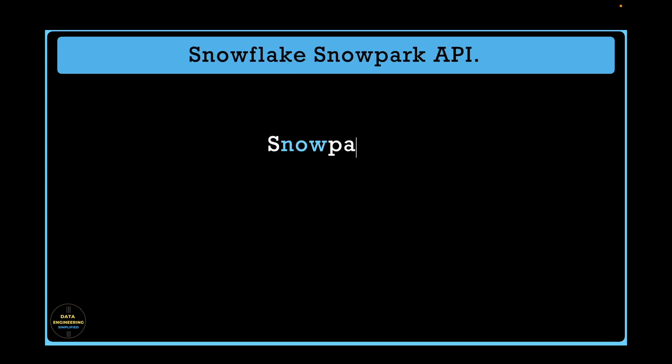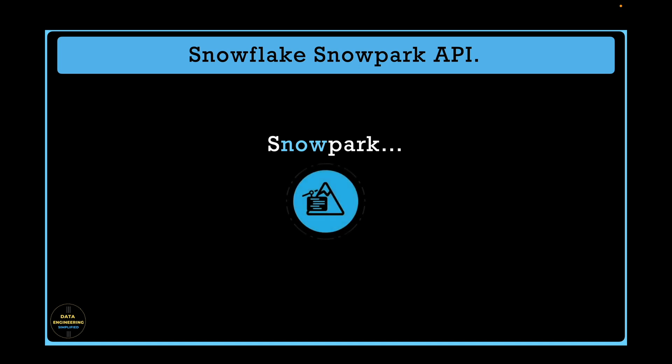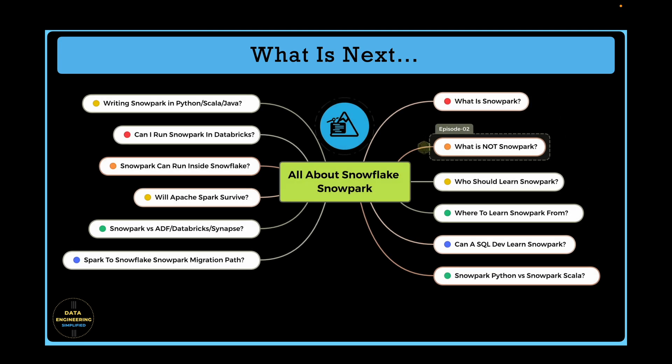Snowpark is a great technology and it is going to change the way we work with Snowflake. The intent of this episode is not to discourage the use of Snowpark, but to bring awareness to the community and teams considering this technology as a replacement for Apache Spark. The limitations and differences discussed between Snowpark and Apache Spark are good enough to consider. Snowpark is evolving very rapidly, and some of these differences may not exist in the near future. But this information brings a different perspective about Snowpark, especially when considering it as your next technology for data development.